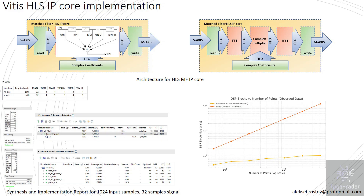The main conclusion on what to choose is simple: if your system operates with a short signal and you need the output quickly with very low iteration latency, time domain implementation is preferable. Conversely, for longer signals, frequency domain implementation is more feasible, since FFT requires far fewer resources than a direct filter implementation.